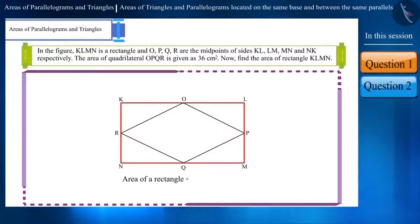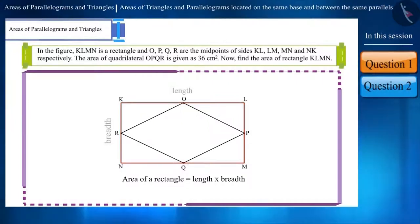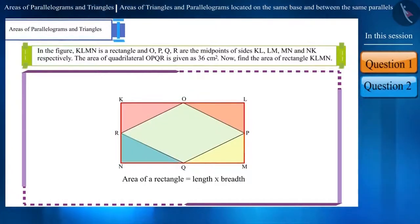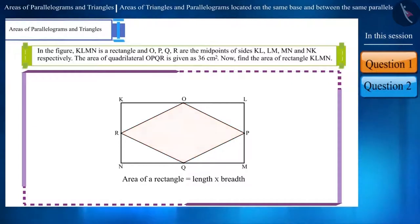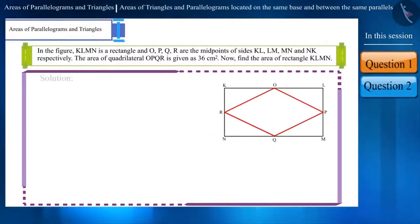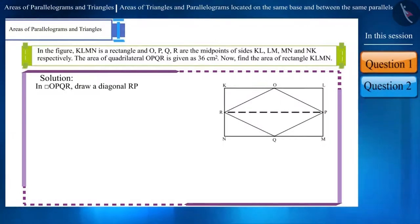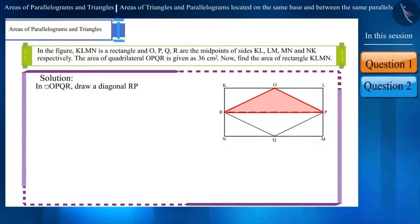The area of a rectangle is equal to the product of its length and breadth, but we have not been given its dimensions. We can see that rectangle KLMN is made by combining these parts, so its area will be obtained by adding the area of all these parts. We have information about the area of OPQR, but not about the area of these individual parts. If we draw a diagonal RP in the parallelogram OPQR, then two congruent triangles will be formed in this quadrilateral.